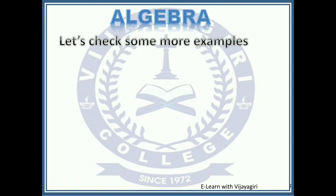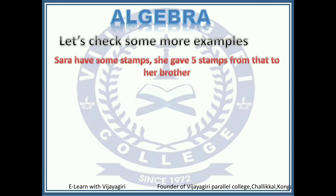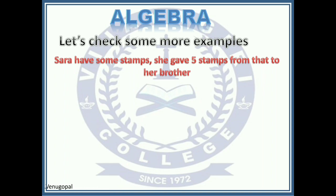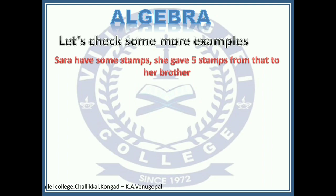Let's check some more examples. Sarah has some stamps and she gave 5 stamps from that to her brother. How many stamps Sarah has is not mentioned — it is an unknown. So we have to use some letter instead of that number. Let's take s as the number of stamps she has. She gave 5 stamps away, meaning we have to reduce by 5, so we can express it as s minus 5.